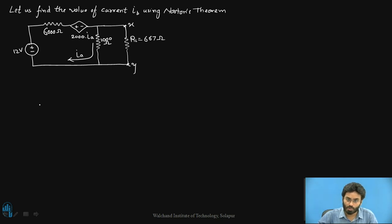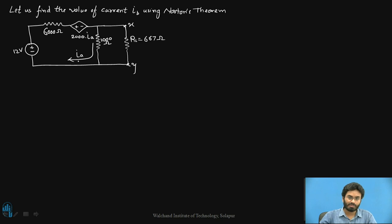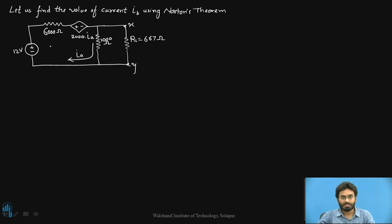Let's have a look at a problem where we have the presence of an independent voltage source as well as a dependent source. This dependent source is a voltage source dependent on 2000 times a current IA, where IA is the first loop current. This is a current-dependent voltage source. We are about to find the current IB, which is the current flowing through the load.